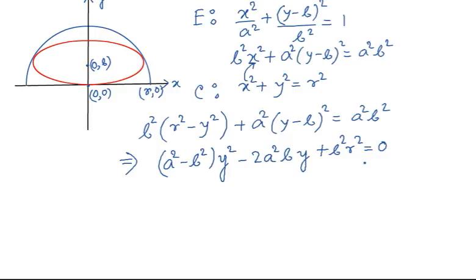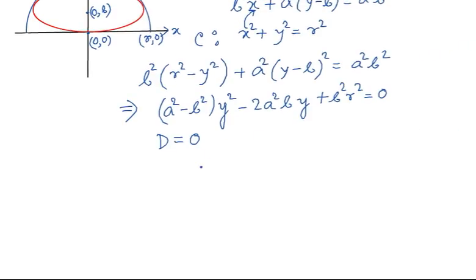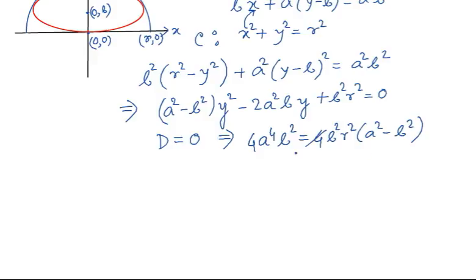Since the ellipse touches the circle at two points with the same y-value, the discriminant of this quadratic must be zero. Setting the discriminant to zero gives: 4A⁴B² = 4B²R²(A² − B²). Cancelling 4B², we obtain the condition R² = A⁴ / (A² − B²), which relates A, B, and R.